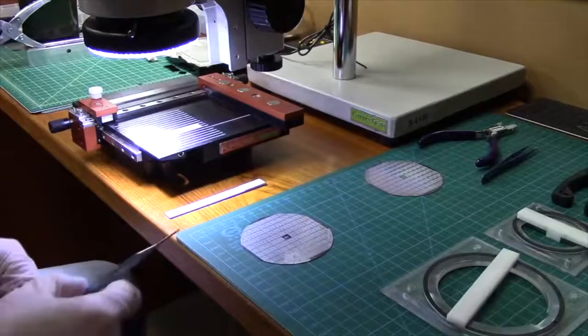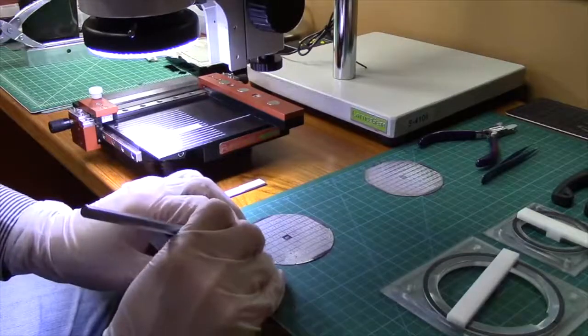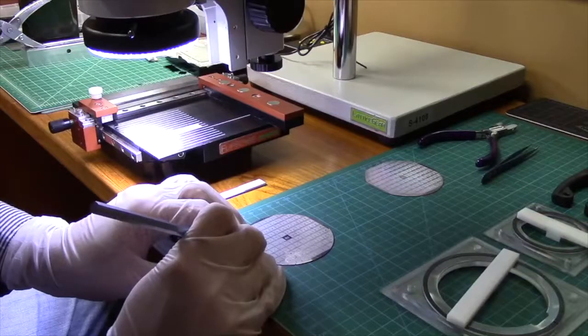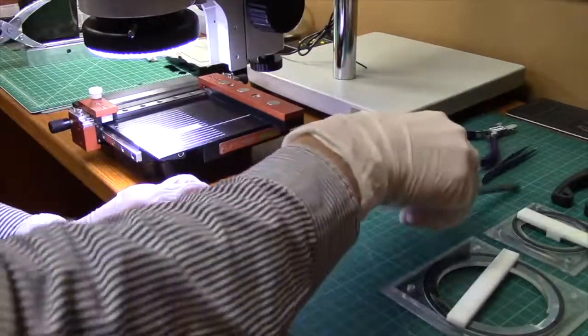With the wafer flat rotated to the bottom, the first scribe is done by hand in the vertical direction. This is a favorable cleave plane and typically produces a straight edge.